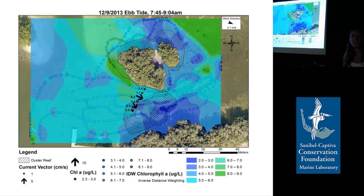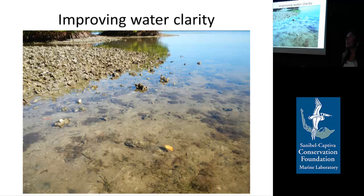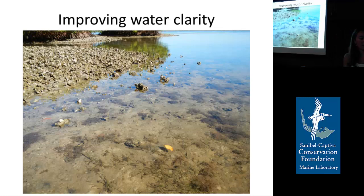This is exciting because no one has really looked at the spatial extent of filtration. You can get a number of how many liters an oyster can filter, but what does that mean out in the field? Adjacent to these oyster reefs are some seagrass beds, and it's been hypothesized that oyster reefs are really important for seagrass beds because they improve water clarity. This supports the idea that oyster reef restoration is a good idea alongside seagrass restoration.